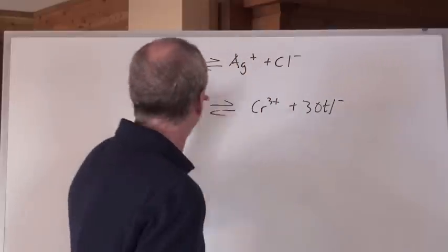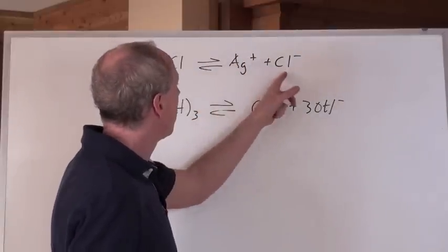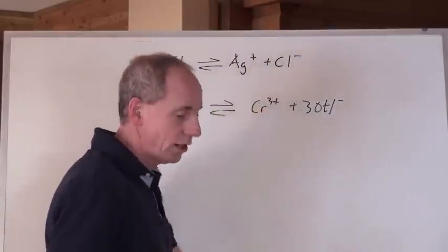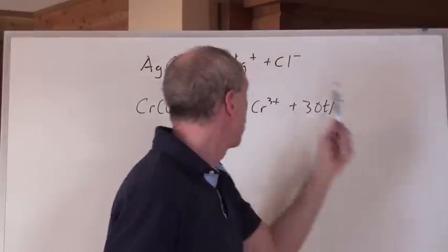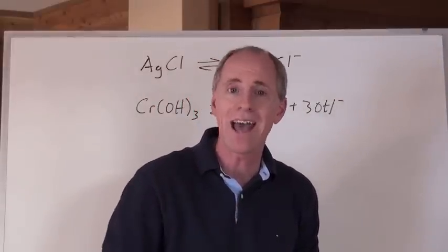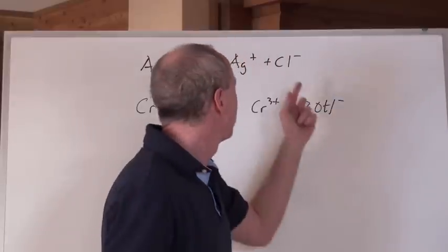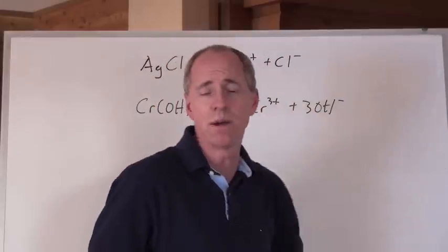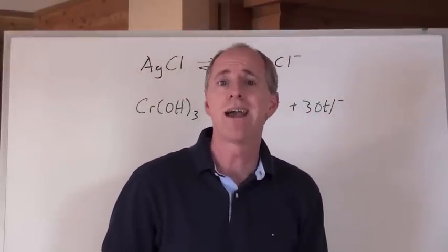Now, conversely, AgCl, well, neither of these two chemicals right here react with acids or bases. Chloride ion is a neutral species in solution. It's the conjugate base ion to a strong acid. So, you know what that means? That means that you can put this into an acid, into a base, and it doesn't affect its solubility at all.